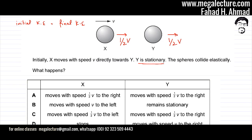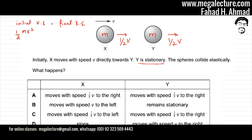Let's assign both spheres a mass of M. The initial kinetic energy for sphere X is half M V squared, since it's moving with velocity V. The kinetic energy for Y initially is zero because its velocity is zero, so half M times zero squared gives zero energy.